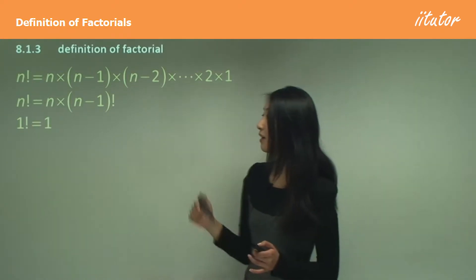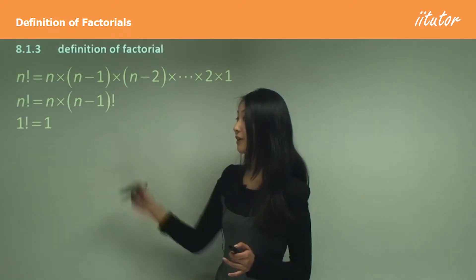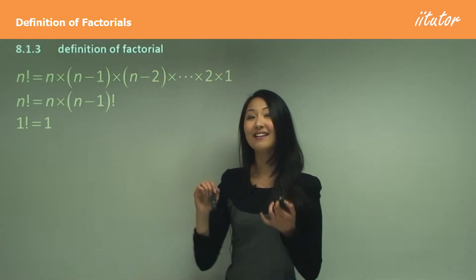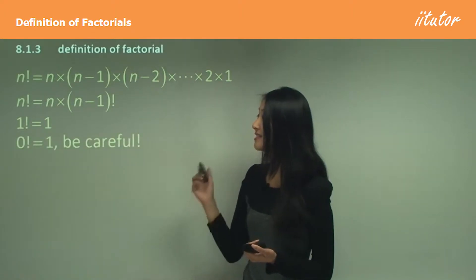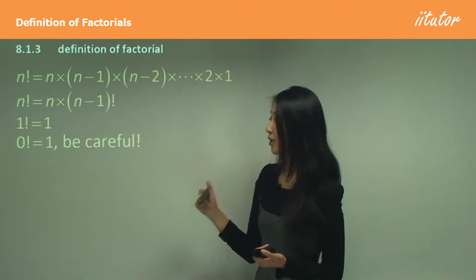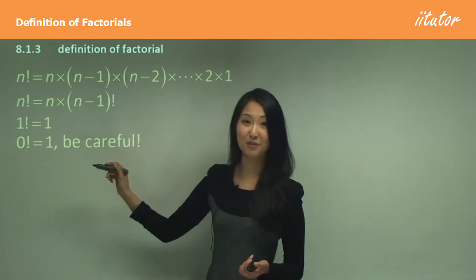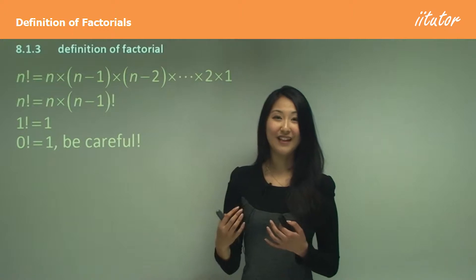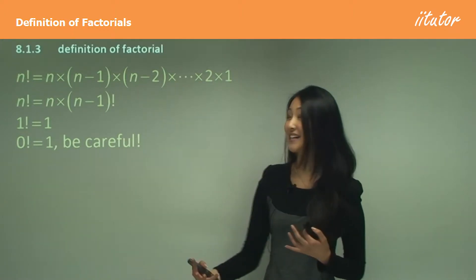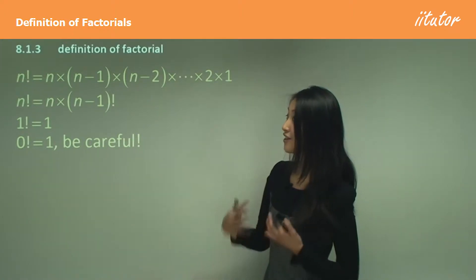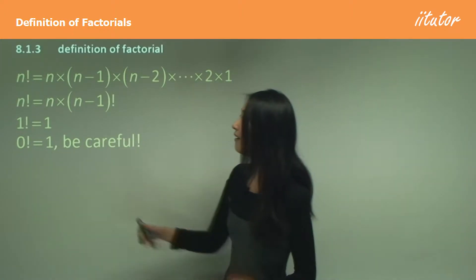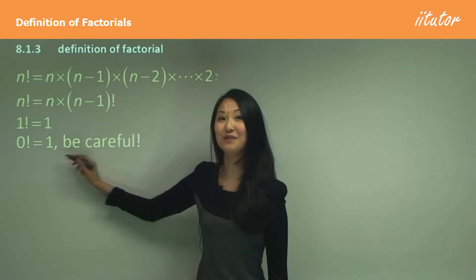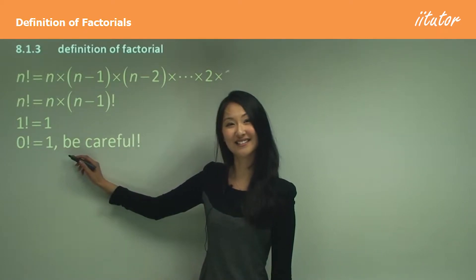Two important points to note: 1 factorial equals 1, and 0 factorial also equals 1. The explanation for zero factorial goes far too deep into theory, so just remember: 0 factorial equals 1.